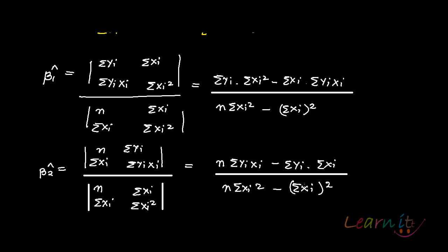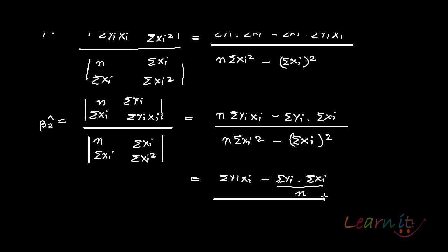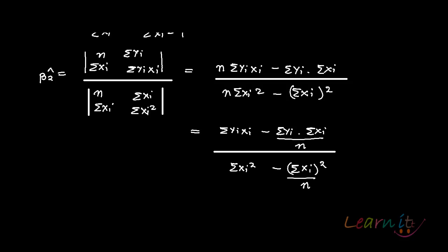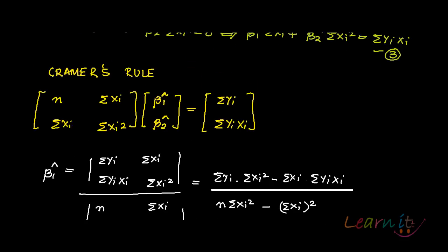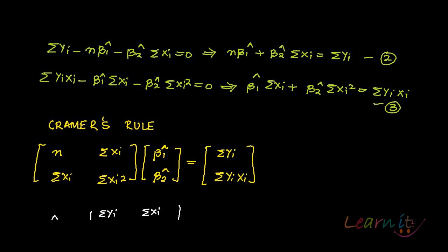If you divide numerator and denominator by n, you get beta2-hat equals (summation yi·xi minus summation yi · summation xi divided by n) divided by (summation xi squared minus (summation xi) squared divided by n). This is your beta2-hat. We will simplify beta1-hat and beta2-hat further in the next recording. This is the derivation of the normal equations and how you derive beta1-hat and beta2-hat under the simple linear regression model.